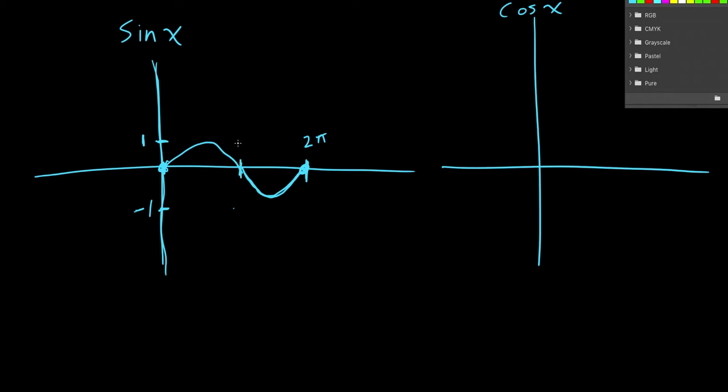Now, this is half the period, so that's pi. You see right here is going to be pi halves, where that peak is. This valley is at 3 pi halves. You may remember these specific values from the unit circle, and that's because it's related.